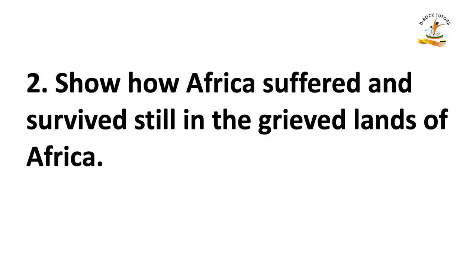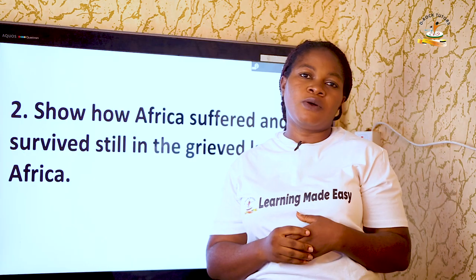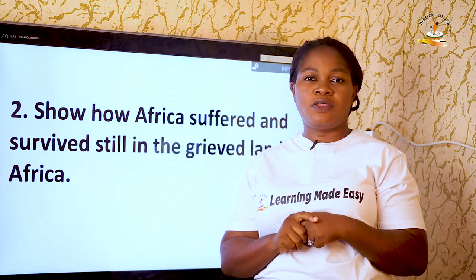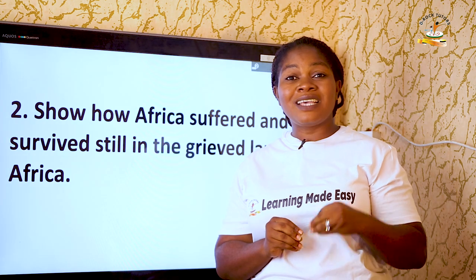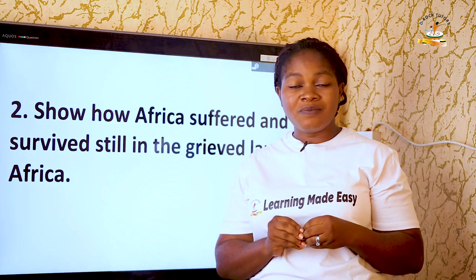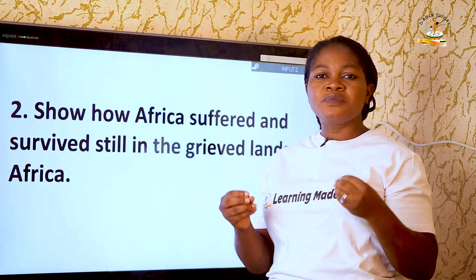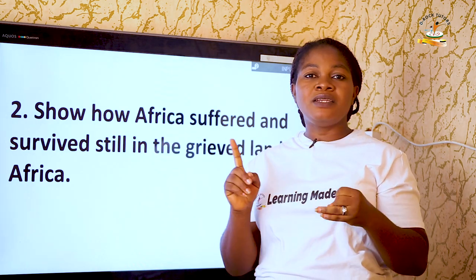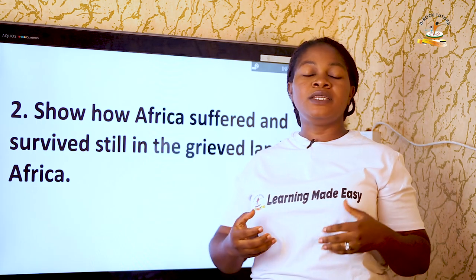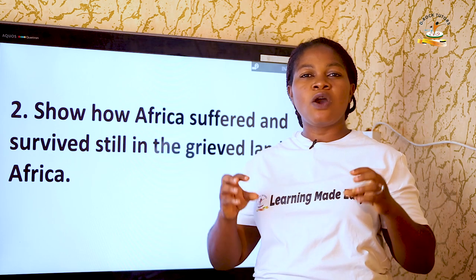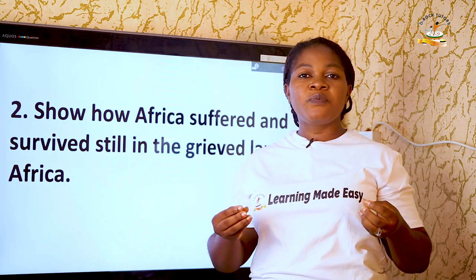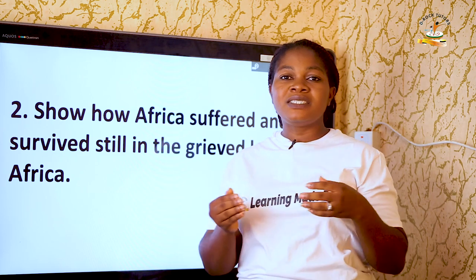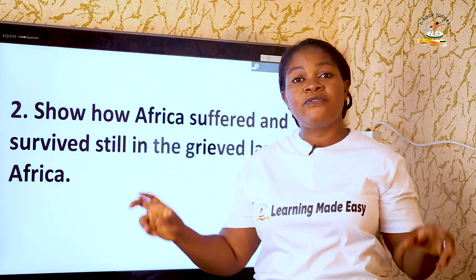Question two: 'Show how Africa suffered and survived' — still in the poem 'The Grieved Lands of Africa.' Agostinho Neto wrote that poem well, especially the end where he says Africa will still survive. The poem describes the trials of Africa during colonialism and the slave trade. When these white people came to tap our resources, they raided us, turned us into slaves, making us feel like lesser human beings.